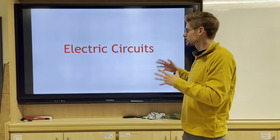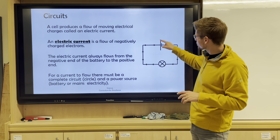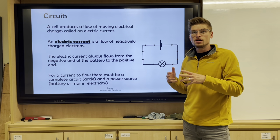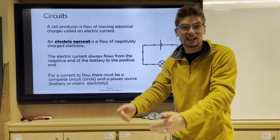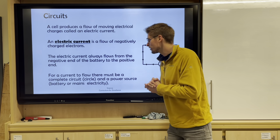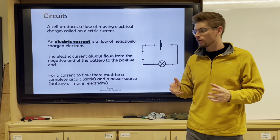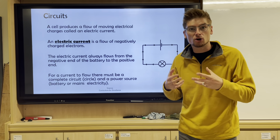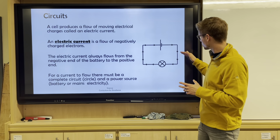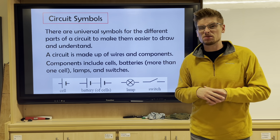Let's move on to electric circuits - the real electricity we can actually use. A cell, like a battery, produces a flow of moving electrical charges called electrical current. The battery gives you electrons that move around and create an electric current. Electric current is a flow of negatively charged electrons, and it always flows from the negative end to the positive end of the battery. When it comes into contact with a bulb it gives it energy and the bulb lights. For current to flow there must be a complete circuit with a power source - cut the wire and there'll be no electricity.